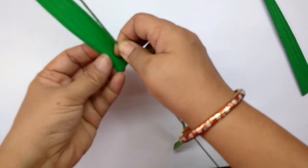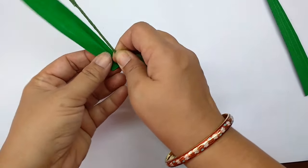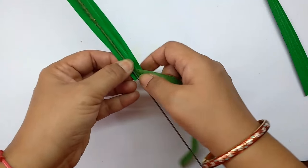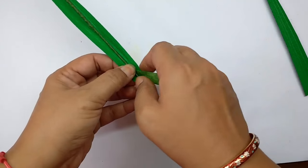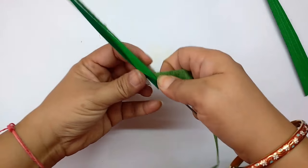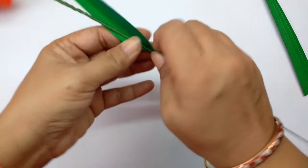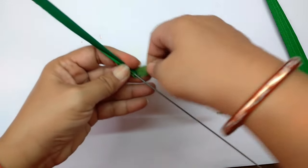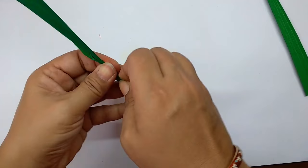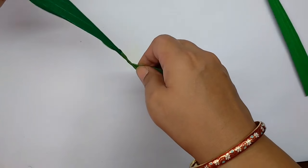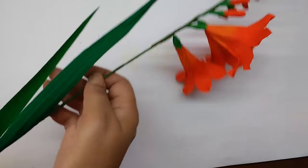Take a leaf and give it a little crease. Hold it on the wire and wind the tape over. So this is how the whole stem would look.